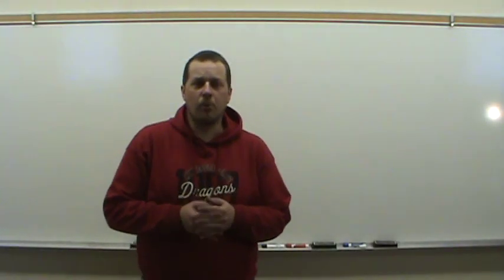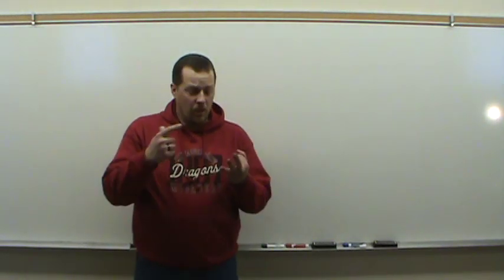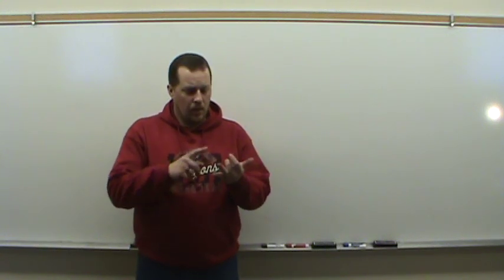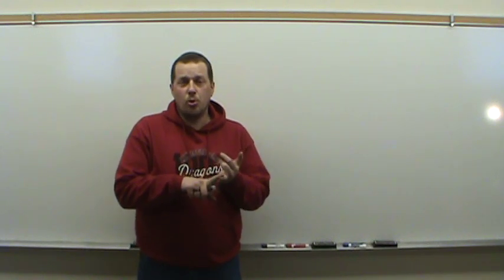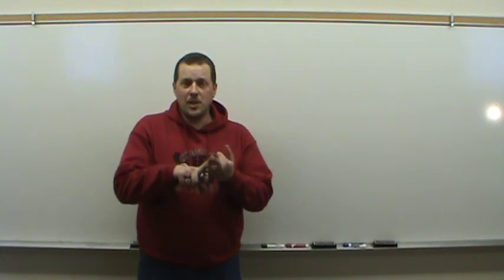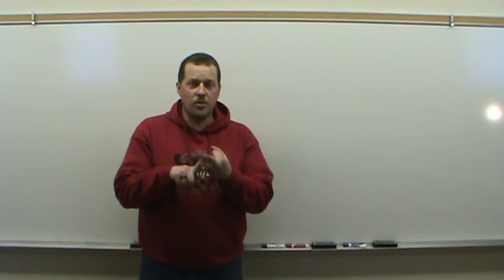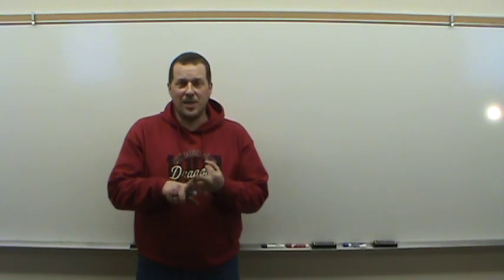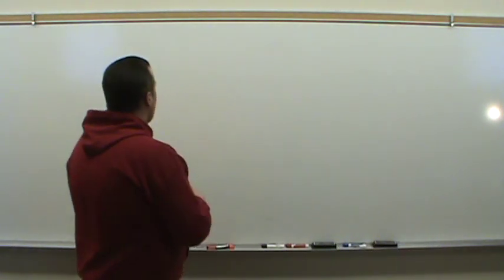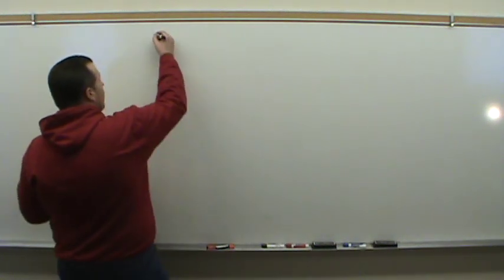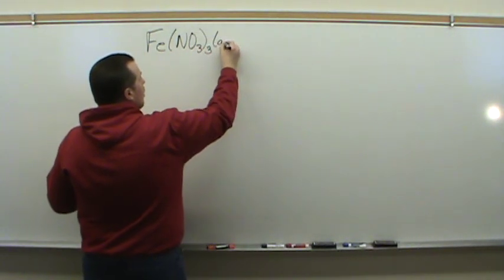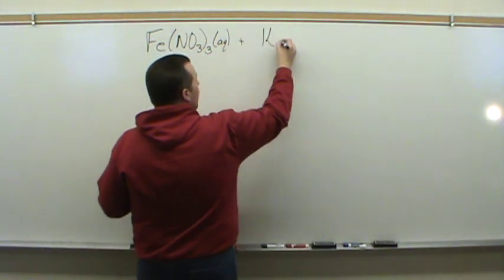In this week's experiment we're going to start looking at equilibrium. There are three parts: the first part involves figuring out what's happening in the experiment, the second part gives us a tool to analyze concentrations at equilibrium, and the third part involves mixing up equilibrium solutions and making determinations about what's happening in that equilibrium. We're going to look at the reaction of iron(III) nitrate with potassium thiocyanate.